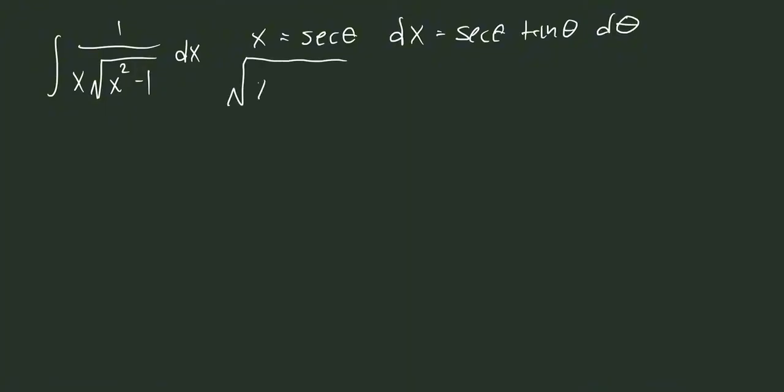And the square root of x squared minus 1 is equal to the square root of secant squared theta minus 1, which is equal to the square root of tangent squared theta, which is equal to tangent of theta.